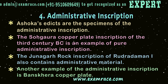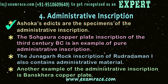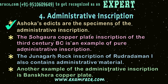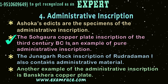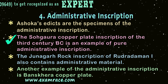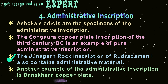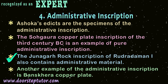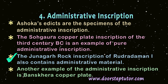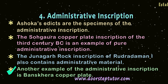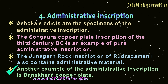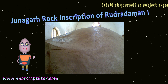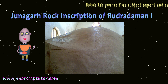Ashoka's edicts are the specimen of administrative inscriptions. The Sahagora copperplate inscription of the 3rd century BC is an example of a pure administrative inscription. The Junagadh rock inscription of Rudradaman I also contains administrative material. Another example of an administrative inscription is the Banskhera copperplate inscription. In this picture, you can see the Junagadh rock inscription of Rudradaman I.